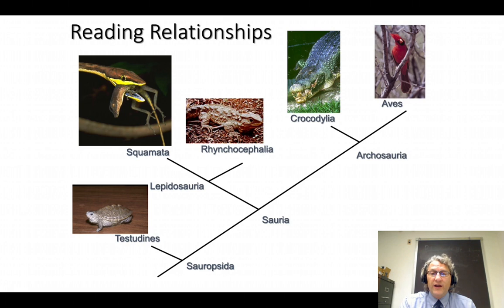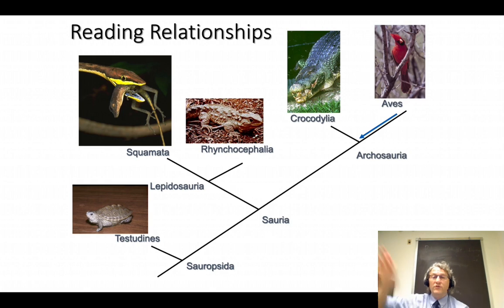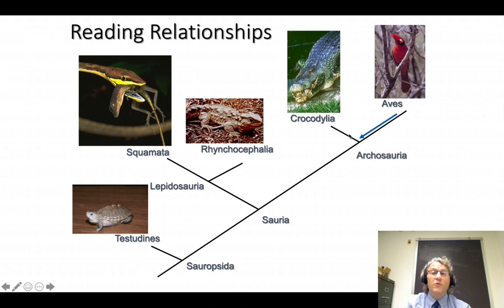On this diagram we can try to find the closest relative to Aves — to birds. The way you do that is you start at the taxon you're interested in, Aves, and go down the tree toward the base. At the first node you encounter, whatever else comes out of that node is collectively the closest relative. So the closest relative to birds on this tree is Crocodilia.